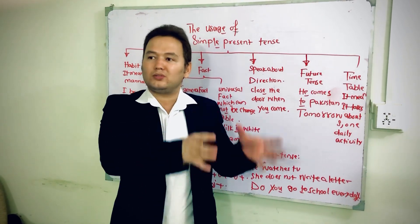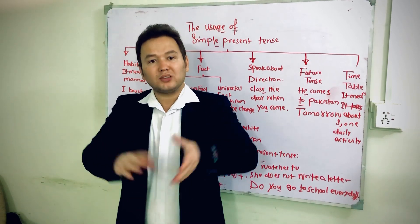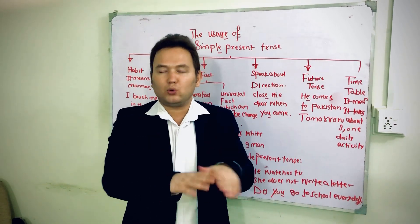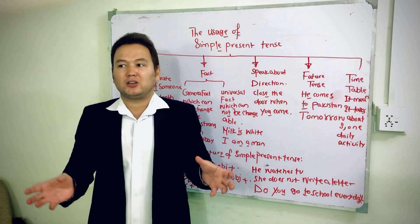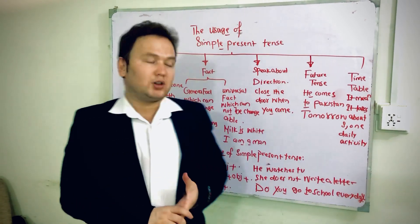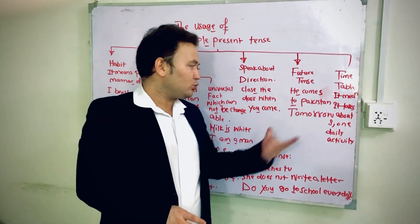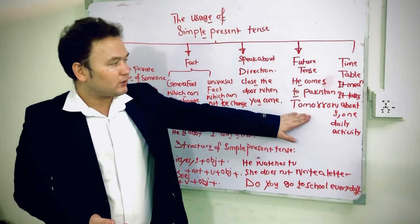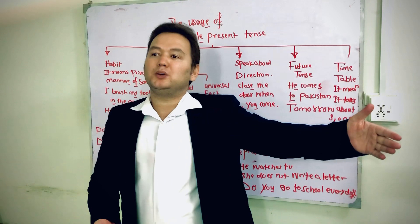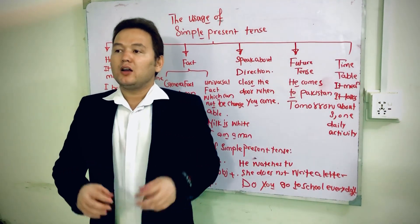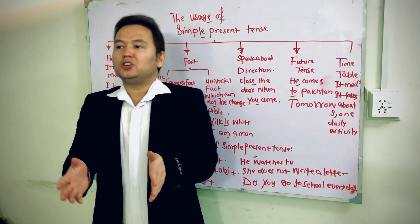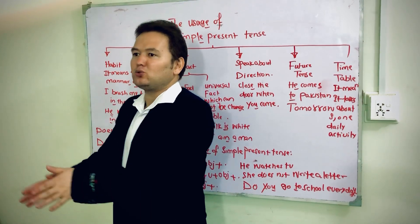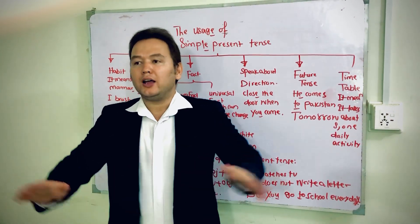Fourth, sometimes we make decisions or schedule something to do in the future. In this case the structure is in simple present tense but it refers to future time. For example: 'He comes to Pakistan tomorrow' — the structure is present but it refers to the future. 'Ahmad has a teaching class tomorrow at this time' — this is his already planned schedule.